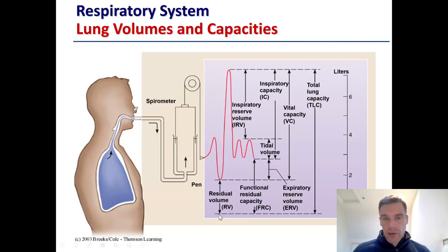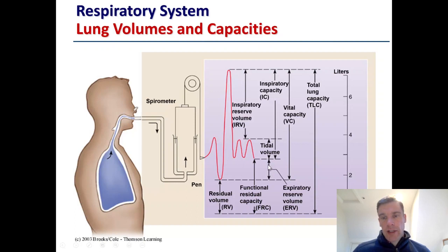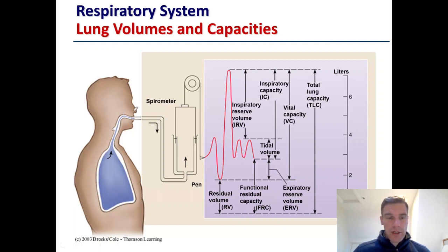In the next video I'll also show equations for the estimation of residual volume, because this is not something we can measure by spirometry, but we can use a predicted equation to estimate it. We can then use residual volume to calculate functional residual capacity, which equals residual volume plus the expiratory reserve volume. From these we can calculate total lung capacity, which includes your vital capacity plus your residual volume. The equations for these will be provided in the next video.